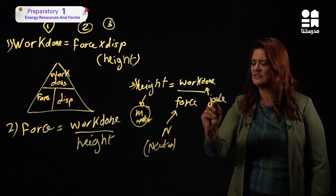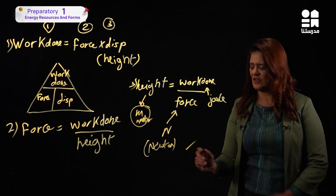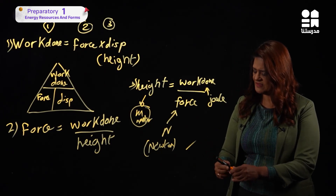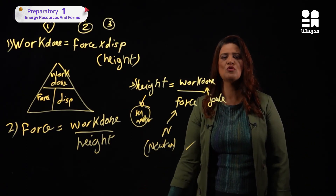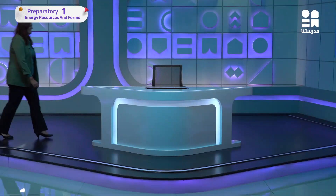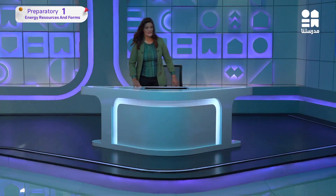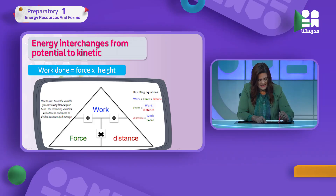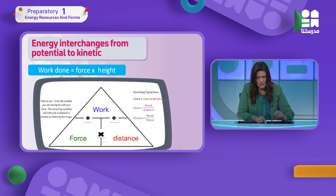Work done is measured in joules. We are going to use this rule to solve problems. Let's see how. First, a quick revision: in the triangle, work done is at the top, meaning force multiplied by displacement or distance. Distance and displacement here are written the same.